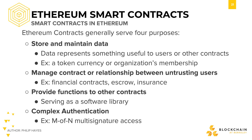Smart contracts can also provide additional functionality to other contracts. You can write contracts that call other contracts, perhaps using them as a software library, leveraging the functionality of an existing contract. And finally, smart contracts can also be used for complex authentication use cases. For example, you can define M-of-N multi-signature, which is also something we looked at when we studied Bitcoin.